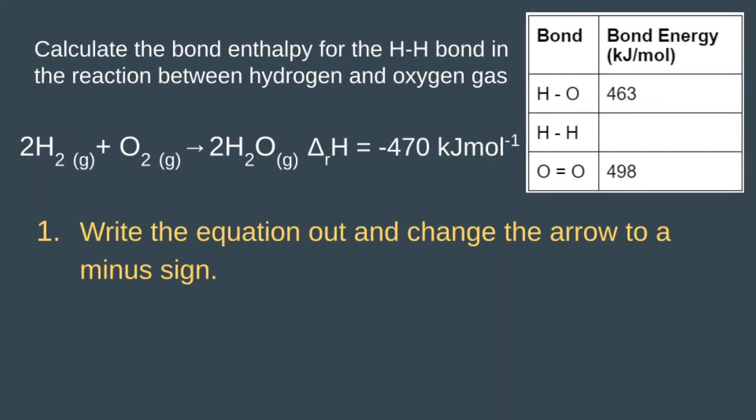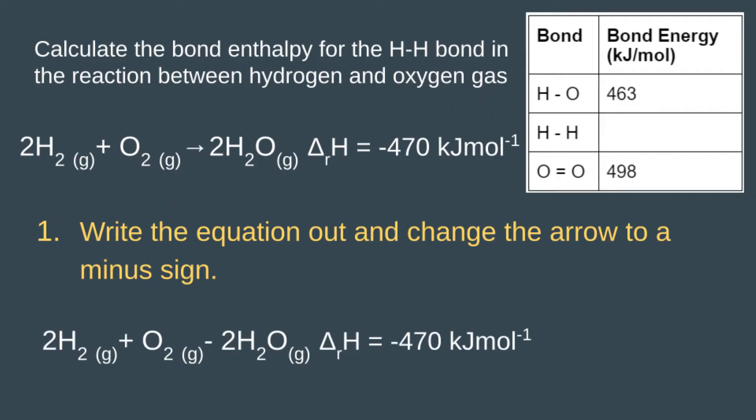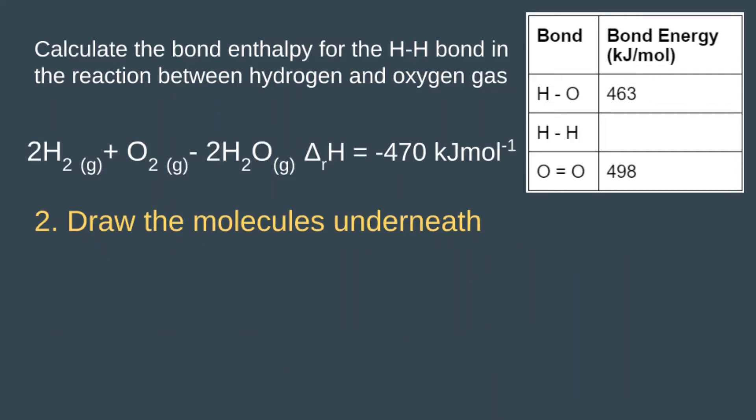The first step in finding the bond energy for the H-H bond is the same as when we are calculating the energy change. We write the equation out and change the arrow to a minus sign.